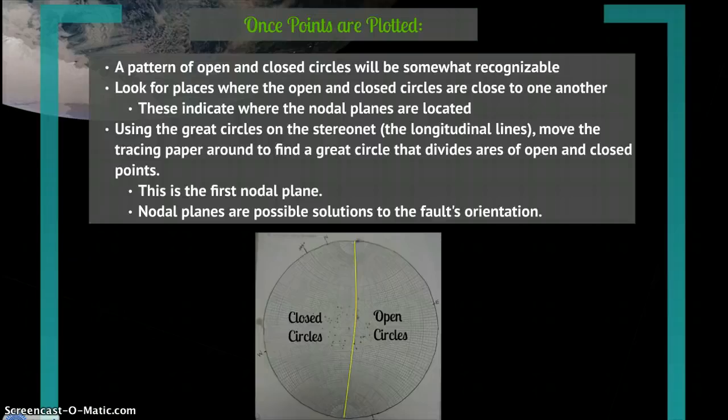Now look for places where these open and closed circles are close to one another. This will indicate where the nodal planes are located. The nodal planes are the possible solutions to the fault plane, and the fault plane is what tells seismologists about the mechanism and geometry of the fault that caused the earthquake. Every earthquake has two nodal planes that are 90 degrees from each other.